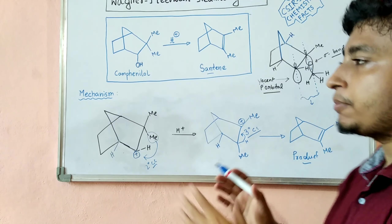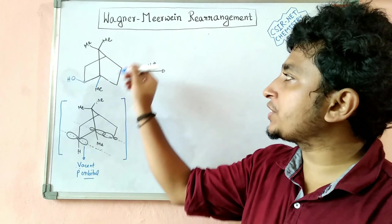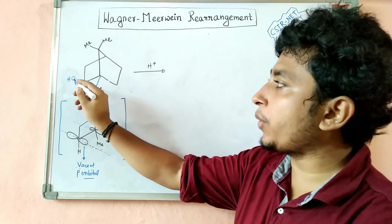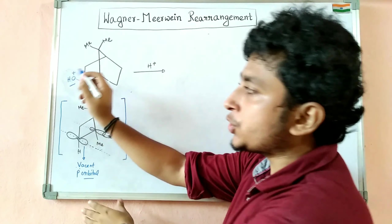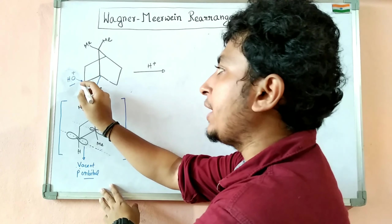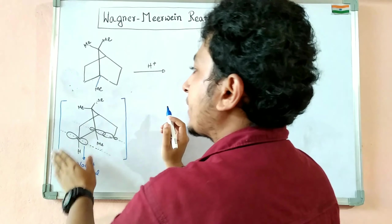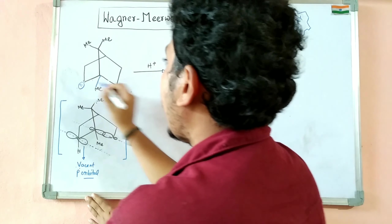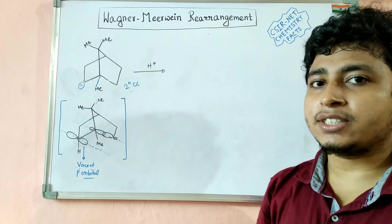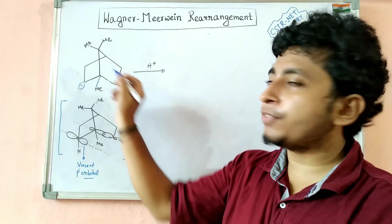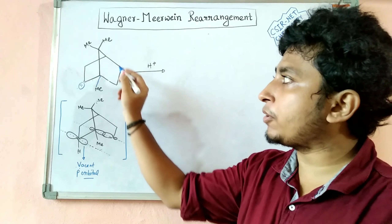Now we will discuss a few examples. When this compound is treated with acidic conditions, the OH will be protonated to form OH2+. OH2+ is a very good leaving group, so it will leave and a carbocation will form. This is a secondary carbocation, and it will try to stabilize itself via migration of a bond to form a tertiary carbocation.